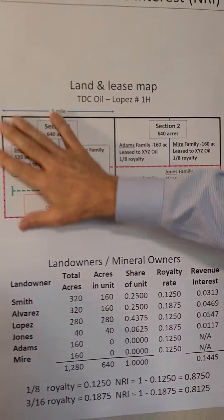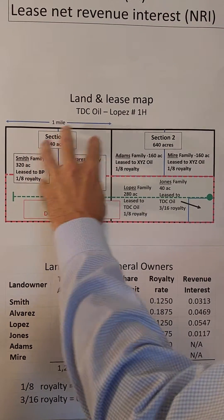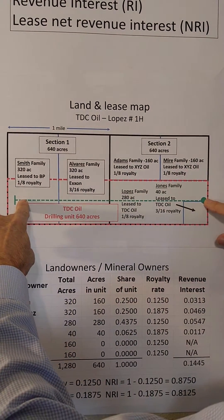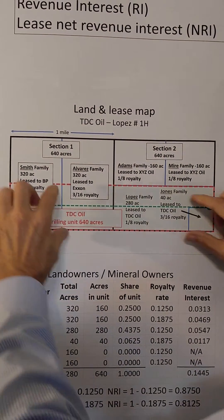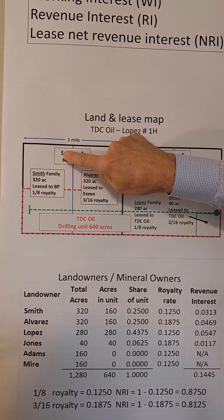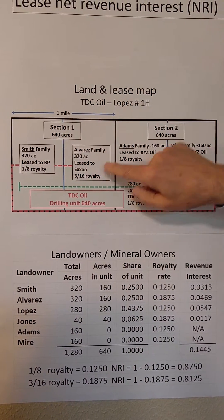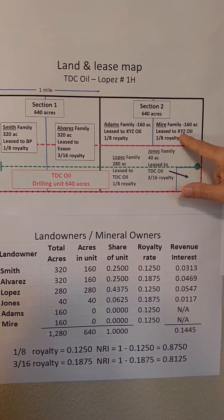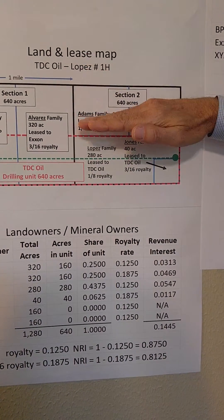Here's a land and lease map sample example. We have two sections of land — 640 acres and 640 acres — owned by different families, and we have a proposed horizontal well right here and a drilling unit set by the state, so this is a 640-acre drilling unit. The Smith family owns 320 acres and they've leased it all to BP for a 1/8th royalty. The Alvarez family owns 320 acres and they've leased it to Exxon but got a higher royalty of 3/16ths. The Adams family and the Mir family leased to XYZ Oil Company at a 1/8th royalty, but they're outside of the unit so they're not going to be involved.